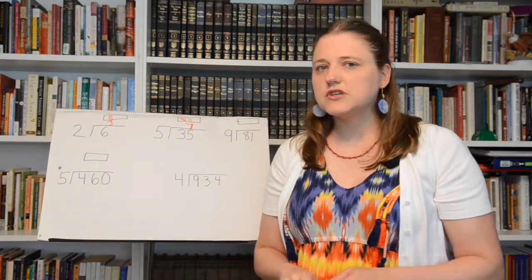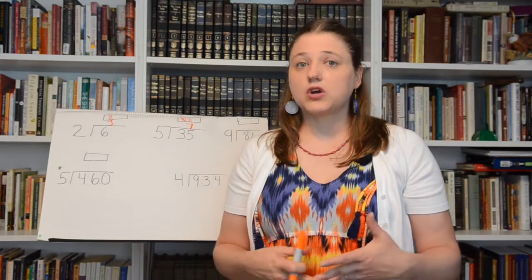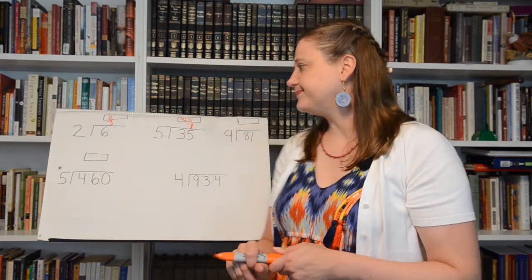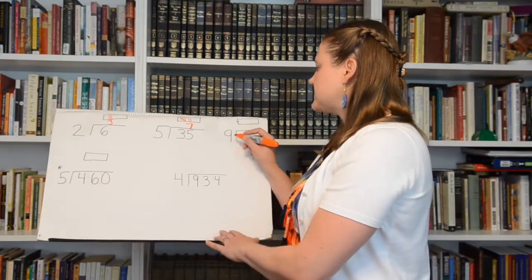Of course, in order for your students to do this, you're going to have had to do some tally work ahead of time so they know that every time you get to four, the next one is a slash mark, and you group tallies by five to make it easier to count. Then they're going to say how many times will nine go into 81?